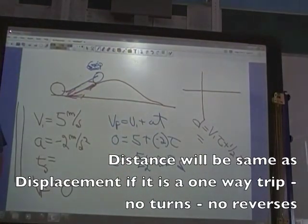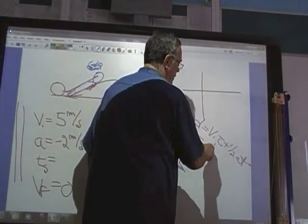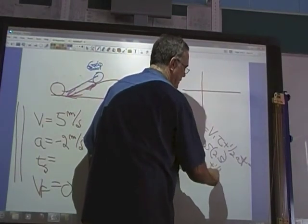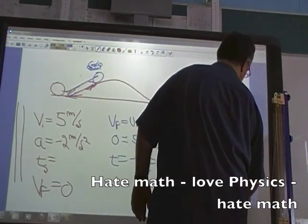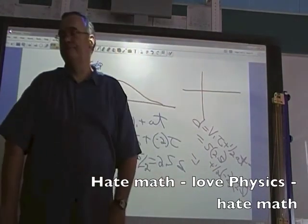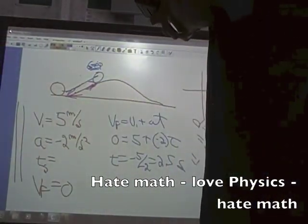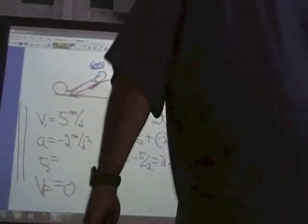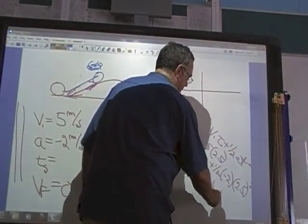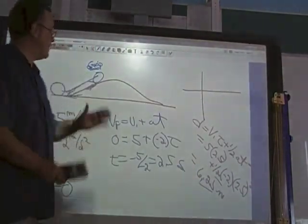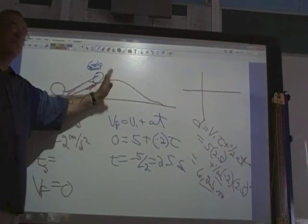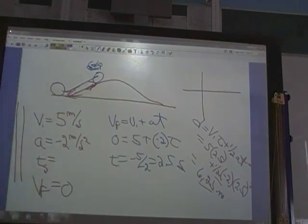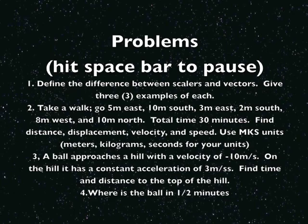So we want to know the displacement from here to here. VIT becomes what? Five times 2.5 plus one half. What's my acceleration? Negative two. And my time? 2.5 squared. Someone do this math. You know I don't do math. Mike, what do you got? 6.25. Thank you, Mike. 6.25 meters. Does that come out positive or negative? Positive because we started here and we went to the right. And right is positive. So that better come out positive 6.25. Are we good? Questions? All right, thank you.